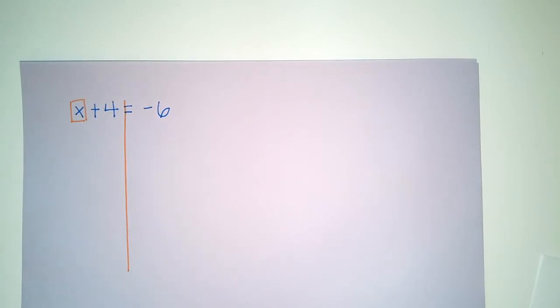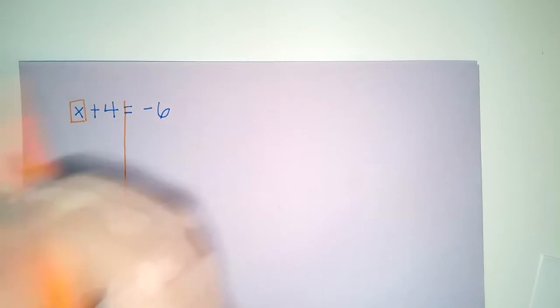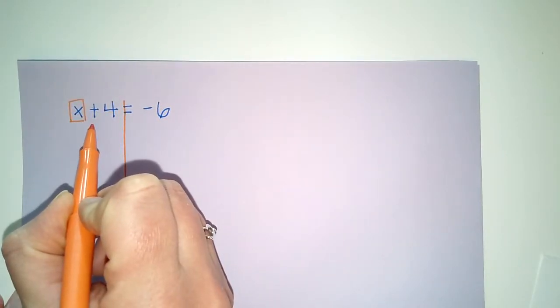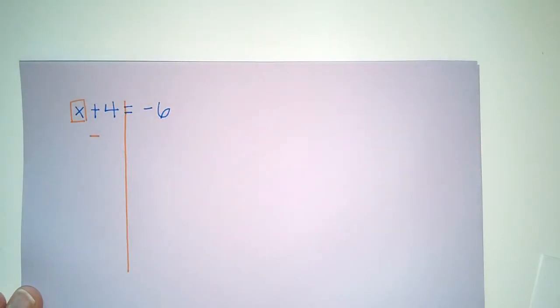Step number two asks us to ask ourselves how to isolate a variable. We do that by using inverse operations. What operation do we see here? Well, we see addition. So to inverse that, I use subtraction.